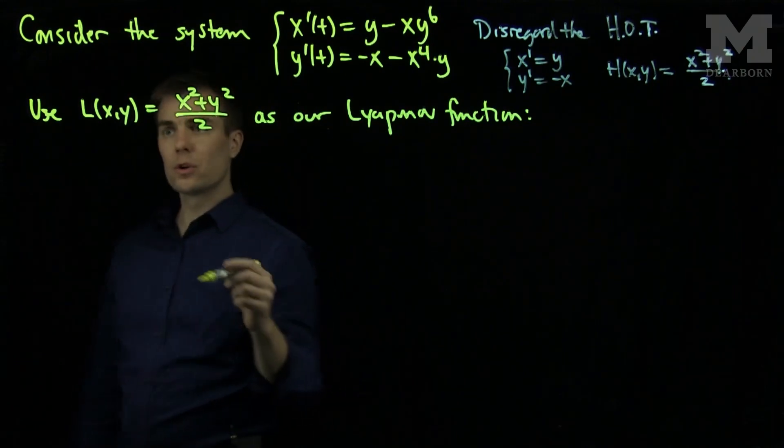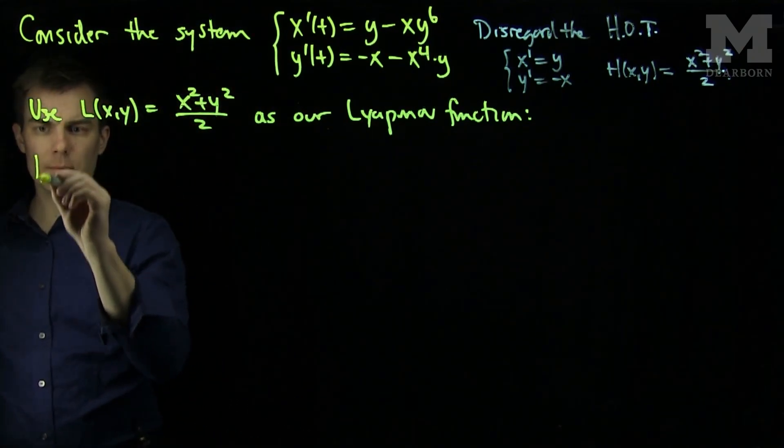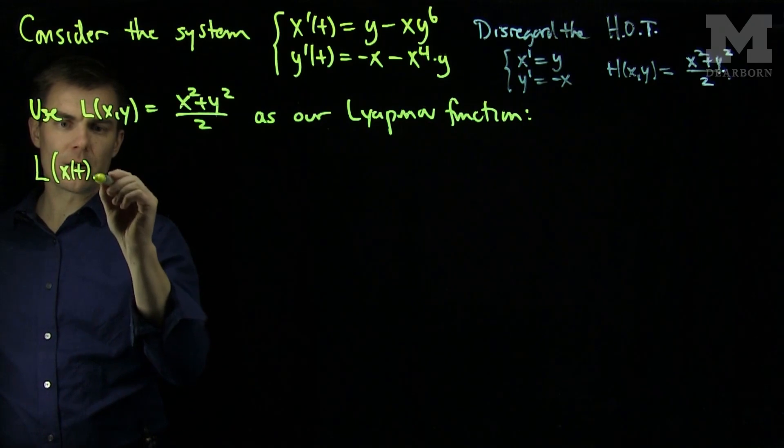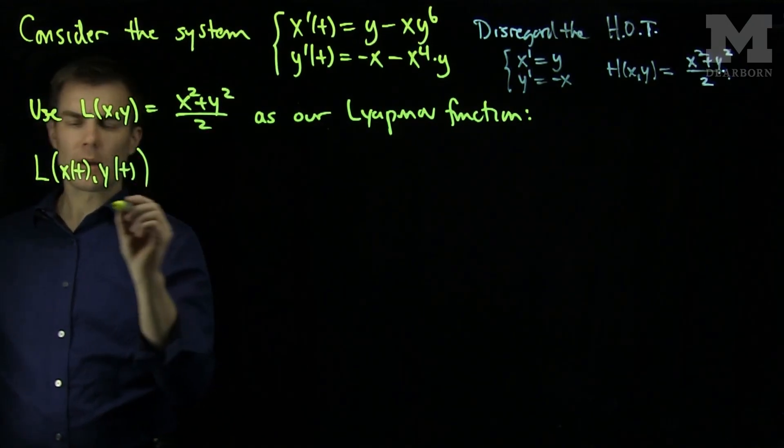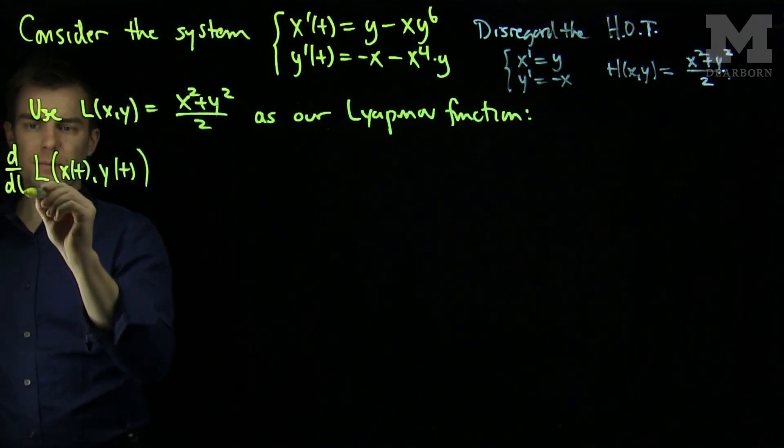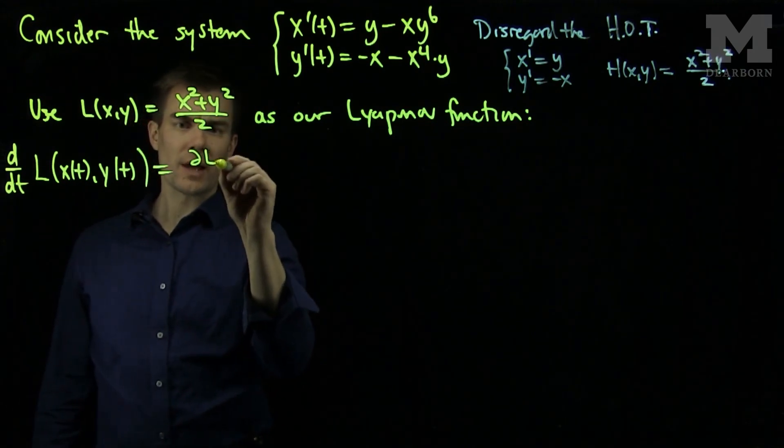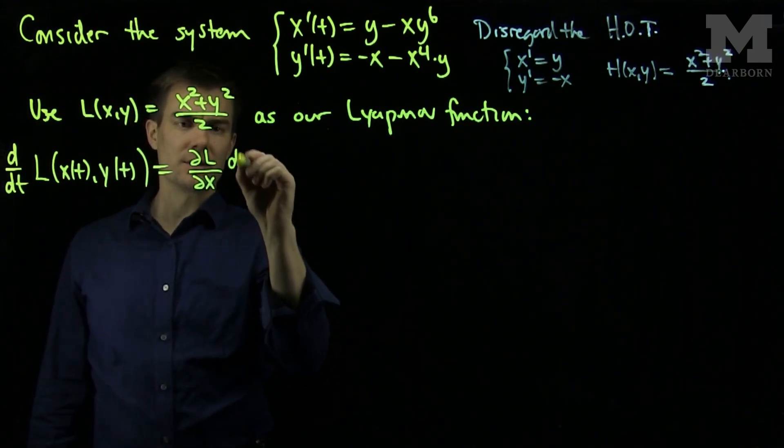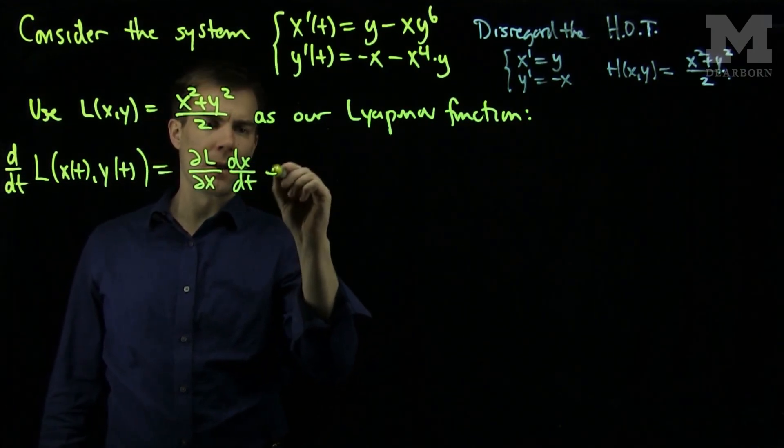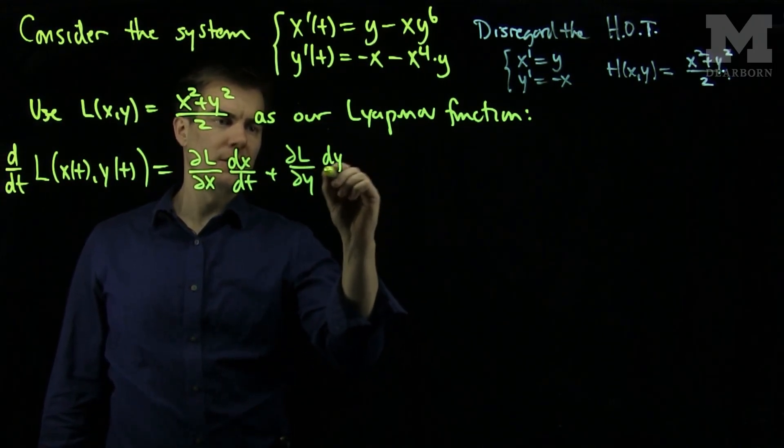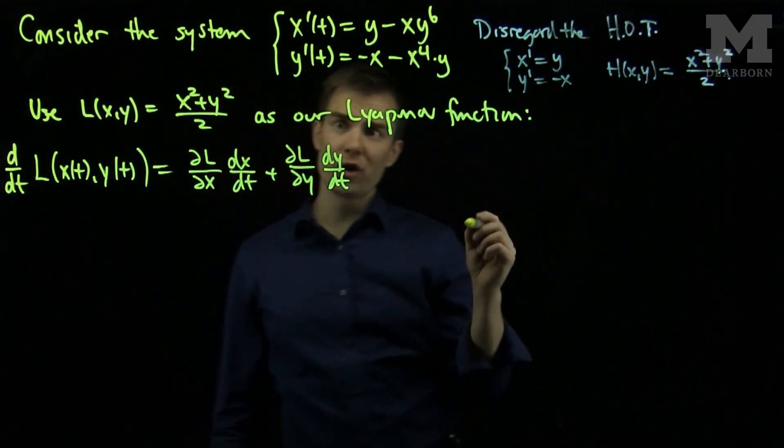So, what we will do is, we will take our trajectory, so we will look at L of x of t, y of t, and we will differentiate this to get partial L partial x dx dt plus partial L partial y dy dt by the chain rule.